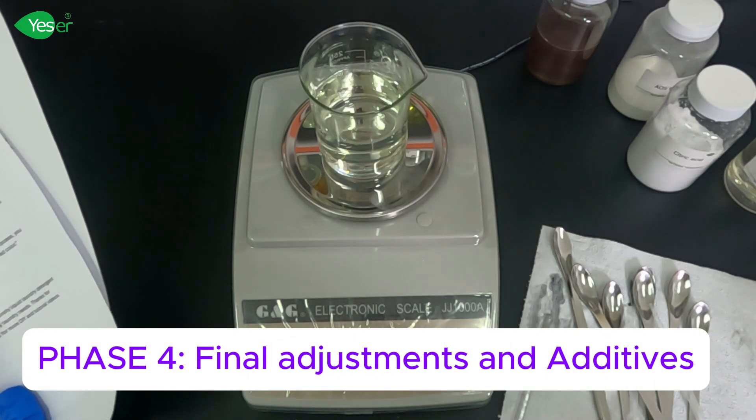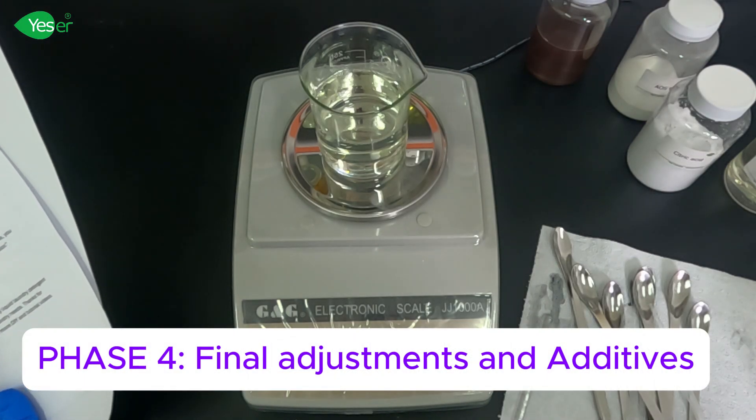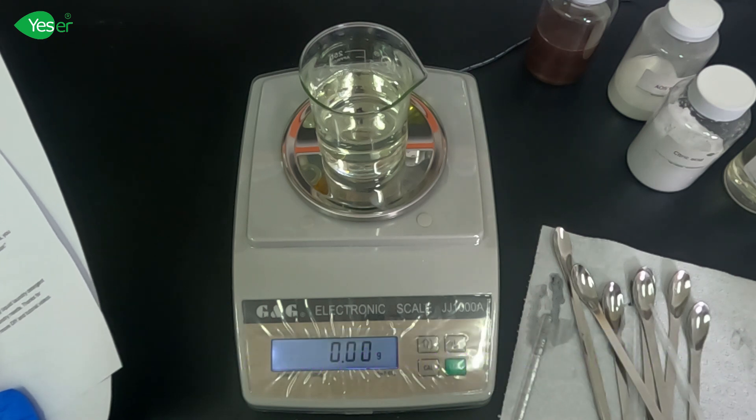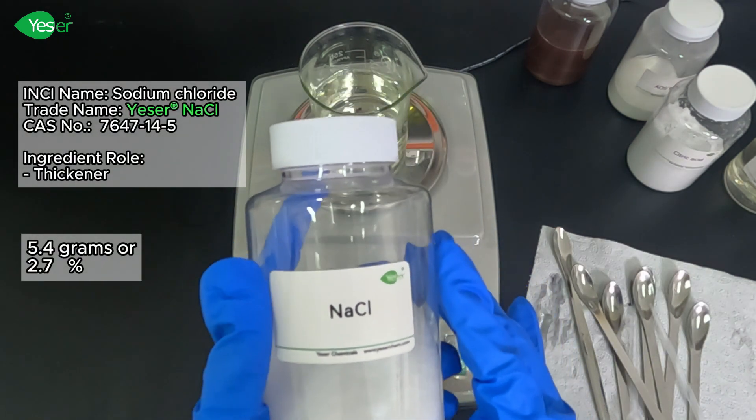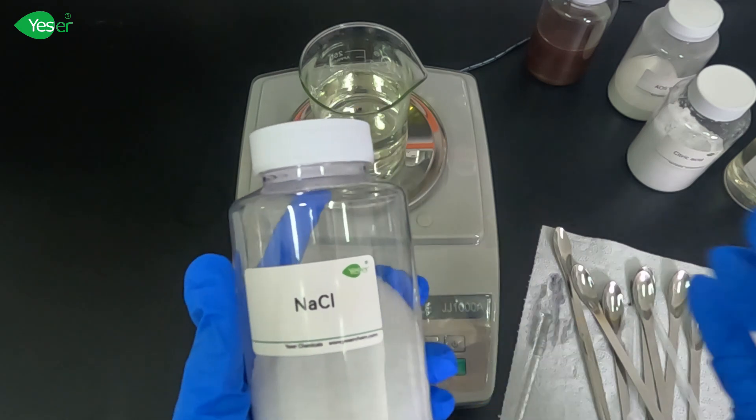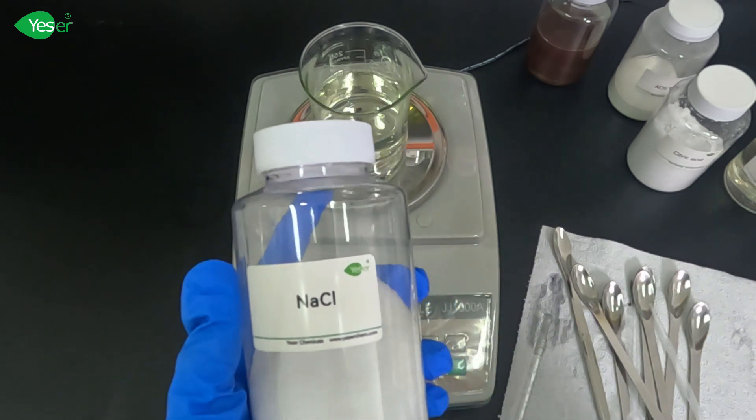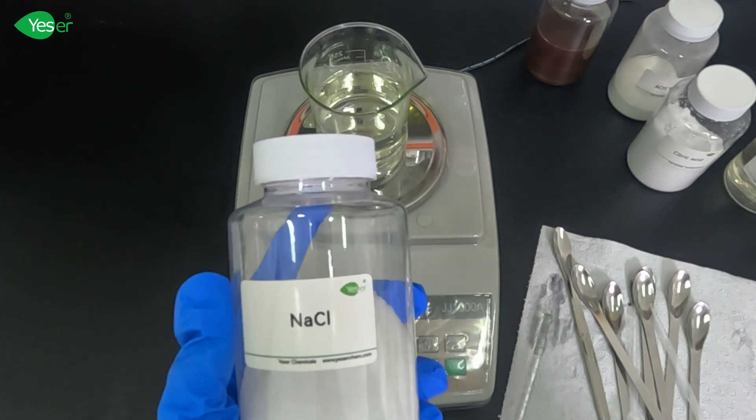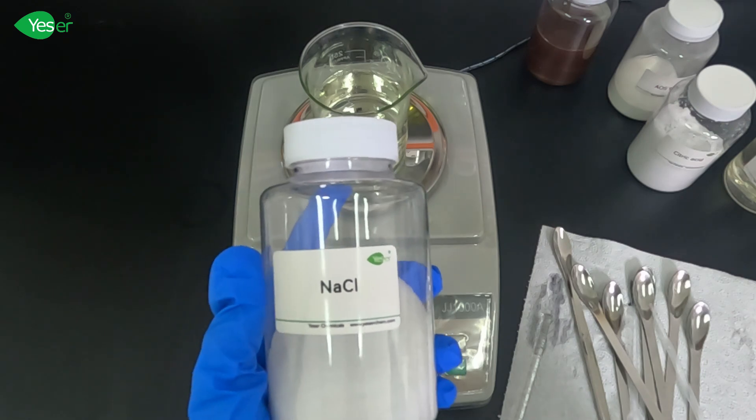After we have adjusted our pH for the solution, we will now add our additives. We will slowly add 5.4 grams of our salt or sodium chloride to the mixture to build our viscosity. Just add this gradually and test the viscosity until the desired thickness is achieved.